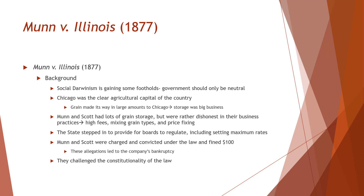Justice Field and Strong are in dissent here, with the majority opinion by Chief Justice Waite. The background: Chicago — kind of the capital of the Midwest, at some point called America's second city. What made Chicago important was its location on the Great Lakes and its role as the agricultural capital of the country. A lot of grain produced by farmers throughout the Midwest and Great Plains went to Chicago.